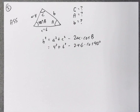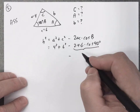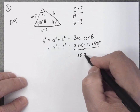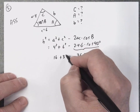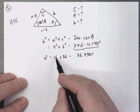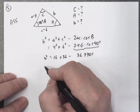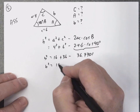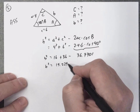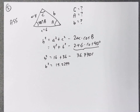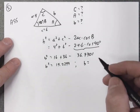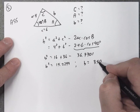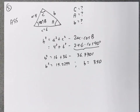Be careful to do this calculation correctly — it's safest to work it out step by step. Four squared is 16, six squared is 36. Combining those and computing carefully gives 15.229. Taking the square root of both sides, we end up with b approximately equal to 3.90. The instructions say to round the side to two decimal places.